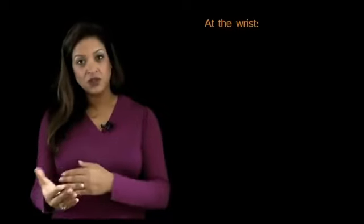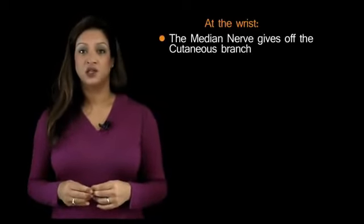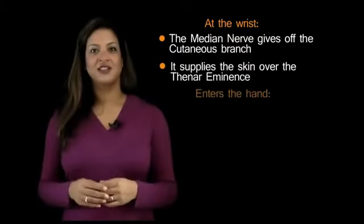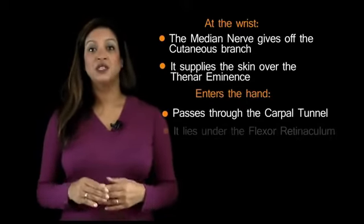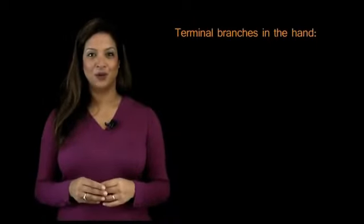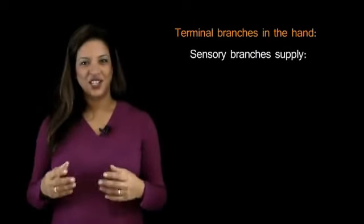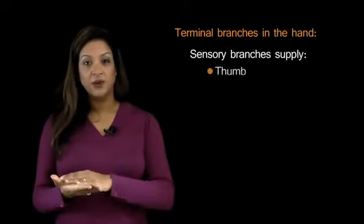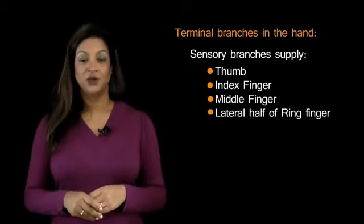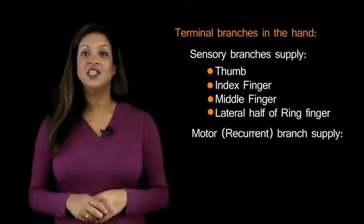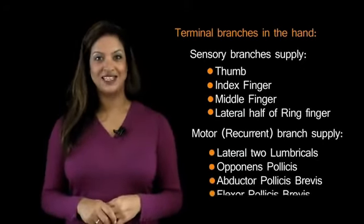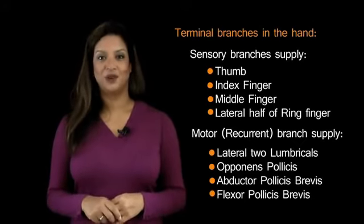About 5cm proximal to the wrist, the median nerve gives off the cutaneous branch, which supplies the skin over the thenar eminence in the palm. The median nerve enters the hand by passing through the carpal tunnel, lying under the fibers of the flexor retinaculum. In the hand, the median nerve divides into its terminal branches: sensory branches supplying the thumb, index finger, middle finger, and the lateral half of the ring finger, and the motor recurrent branch supplying the LOAF muscles — the lateral two lumbricals, opponens pollicis, abductor pollicis brevis, and flexor pollicis brevis.